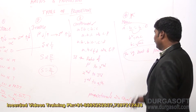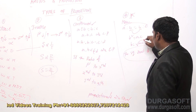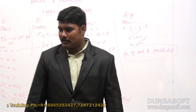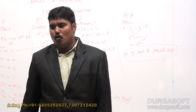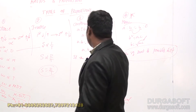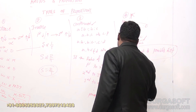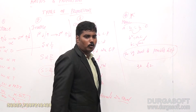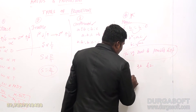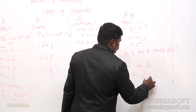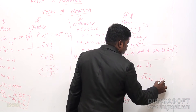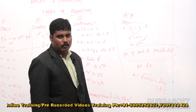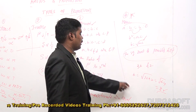Square root of the product of extremes. Suppose for example: what is the mean proportion between 32 and 2? The mean proportion is the square root of 32 into 2, which gives the square root of 64. So the answer is 8. By this way we can conclude the answers.